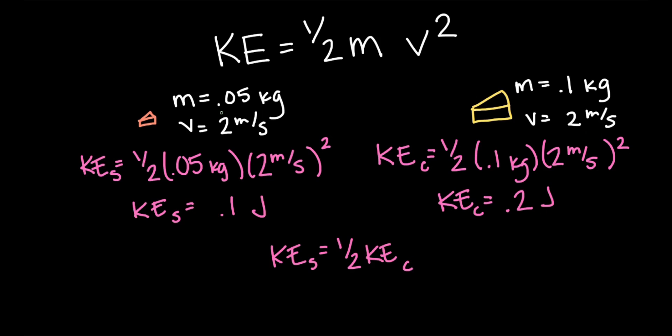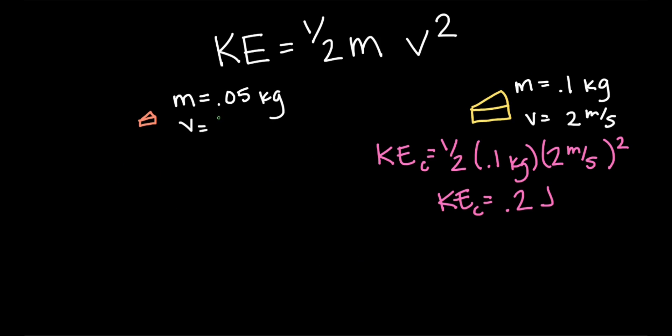So we can see that at the same speed, the cheddar has more kinetic energy because it has more mass. But when the Swiss has a speed of 4 meters per second, and the cheddar still has a speed of 2 meters per second,